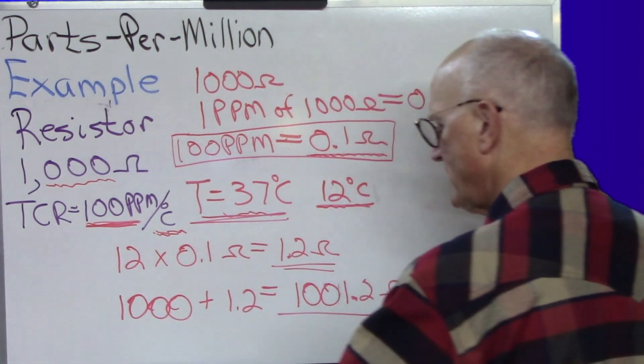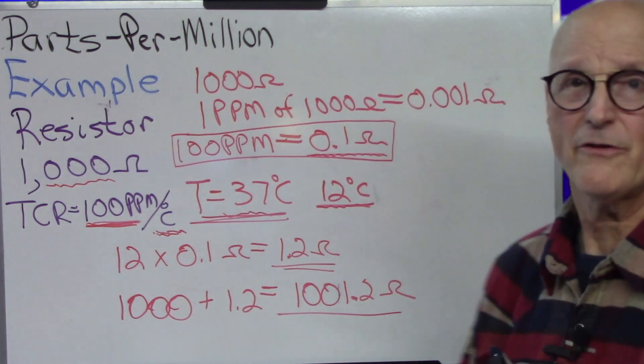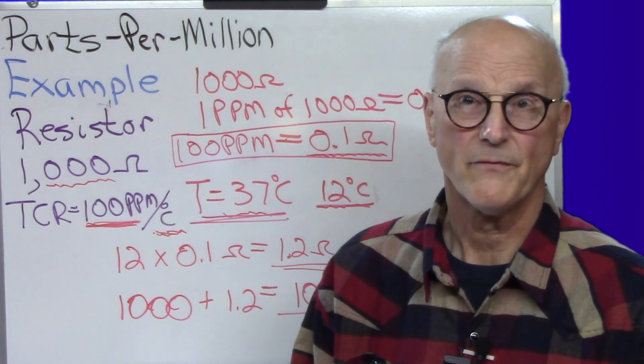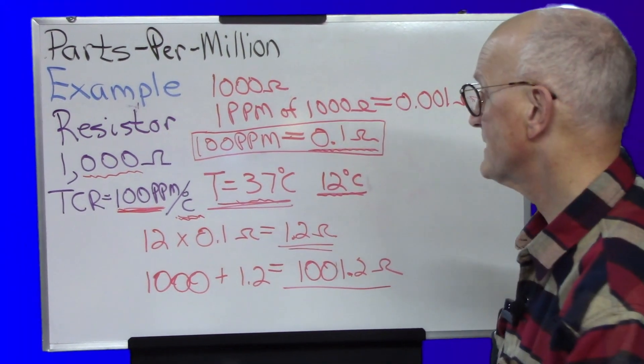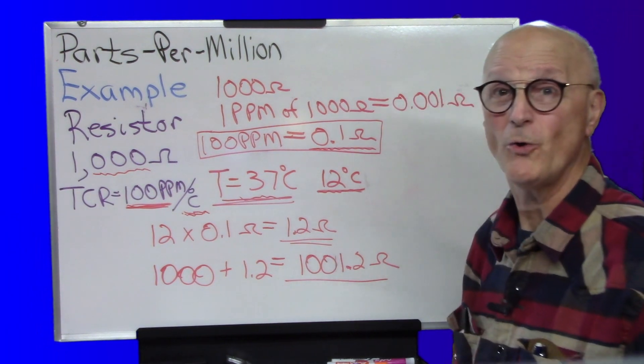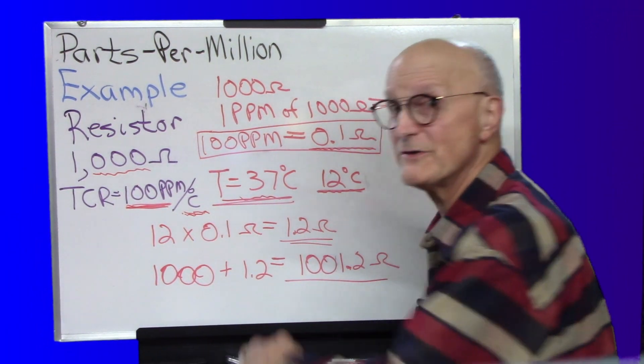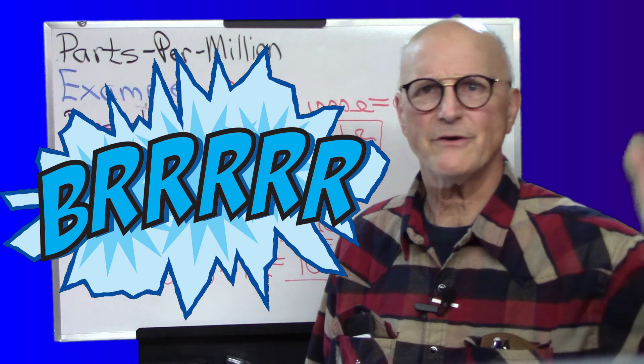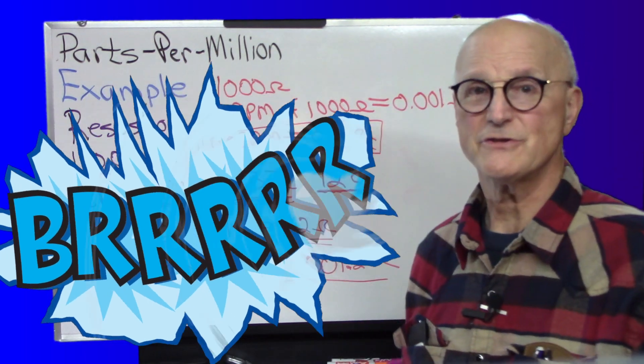And the hotter that resistor gets, the higher the value is going to go. Conversely, if the resistor gets really cold, you take it out on a cold winter day, it's 40 below zero, well the resistor value is going to decrease.